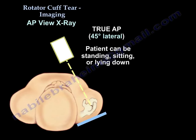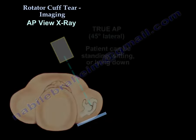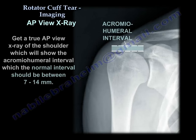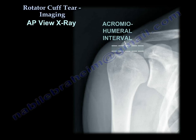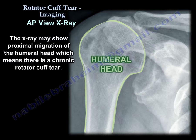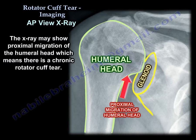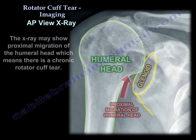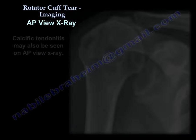We will get X-rays for the patient. We will get a 2-AP view, which will show us the acromiohumerel interval, which is about 7 to 14 millimeters. The X-ray may show you proximal migration, which means a chronic cuff tear. The X-ray can also show you calcific tendinitis.